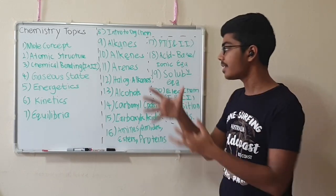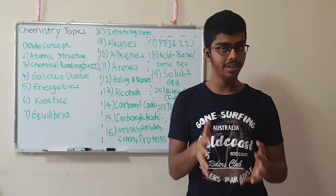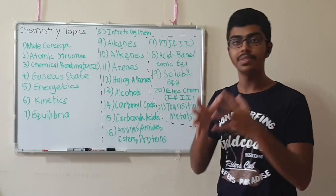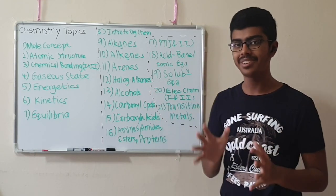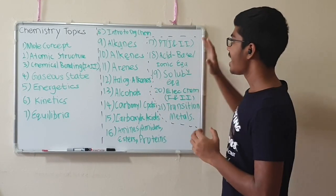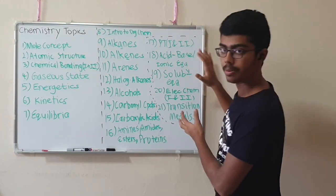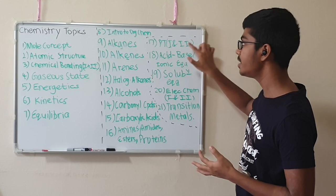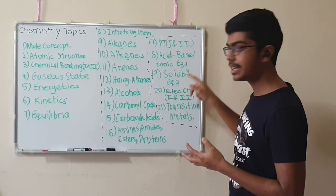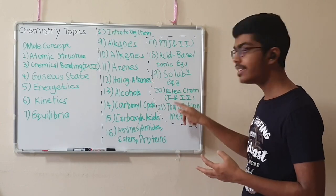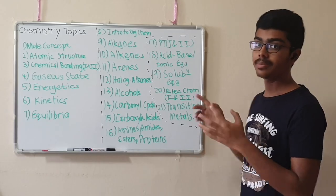I know it's a very huge list, but it's not to scare you. It's going to be a huge transition from O-level organic chemistry, but watching this video will help you digest all of these topics much easier. The remaining topics are Periodic Table 1 and 2, Acid-Base or Ionic Equilibrium, Solubility Equilibrium, Electrochemistry 1 and 2, and Transition Metals.